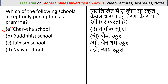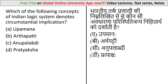Question: Which of the following concepts of the Indian logic system denotes circumstantial implication? The options are: Anumana, Arthapati, Anupalabdi, and Prateksha. The correct answer is option B: Arthapati. The concept of Arthapati in the Indian logic system denotes circumstantial implication.